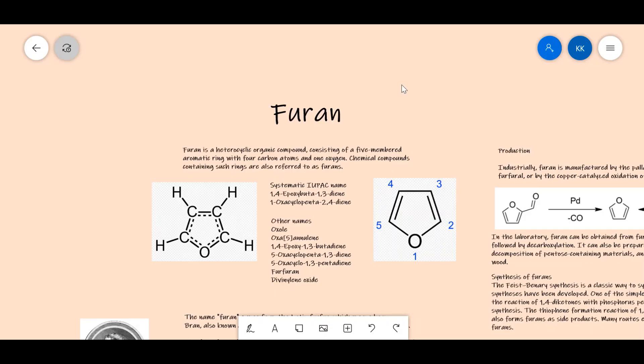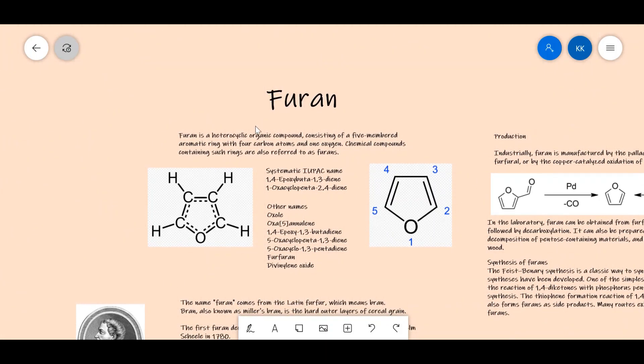Hello guys, in today's video we are going to discuss the chemical compound Furan. Furan is a heterocyclic organic compound consisting of a five-membered aromatic ring—one, two, three, four, five—which has one oxygen atom.